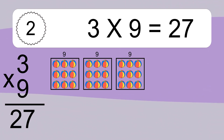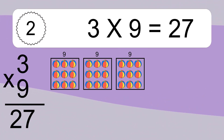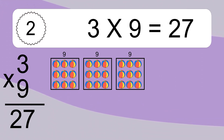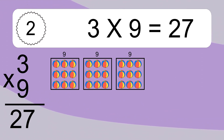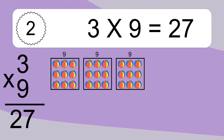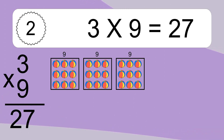We have 3 boxes, and each box has 9 colorful balls inside. If you count all the balls in all the boxes together, you will have 3 times 9 balls. This equals 27 balls.